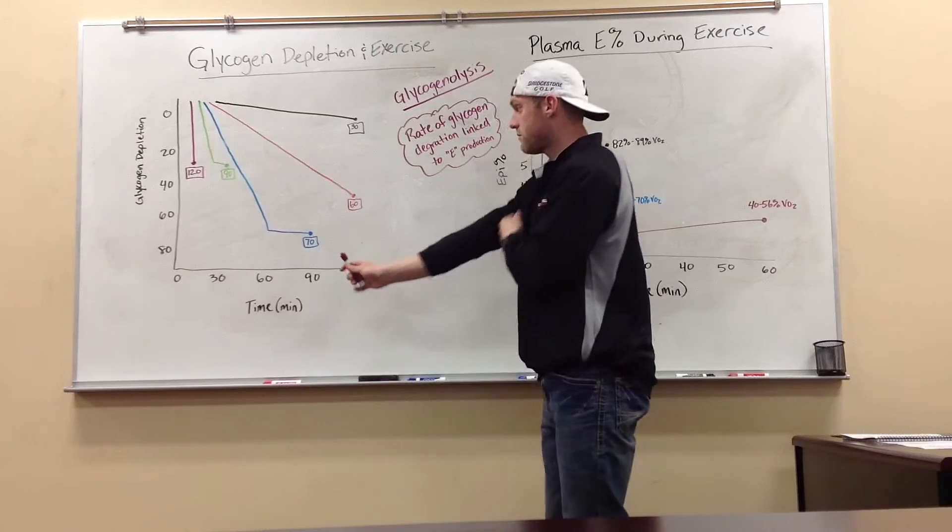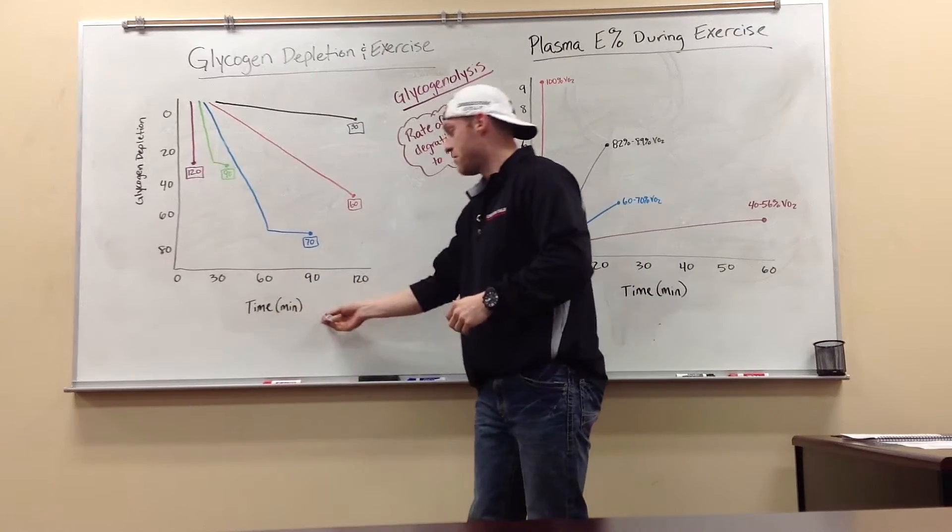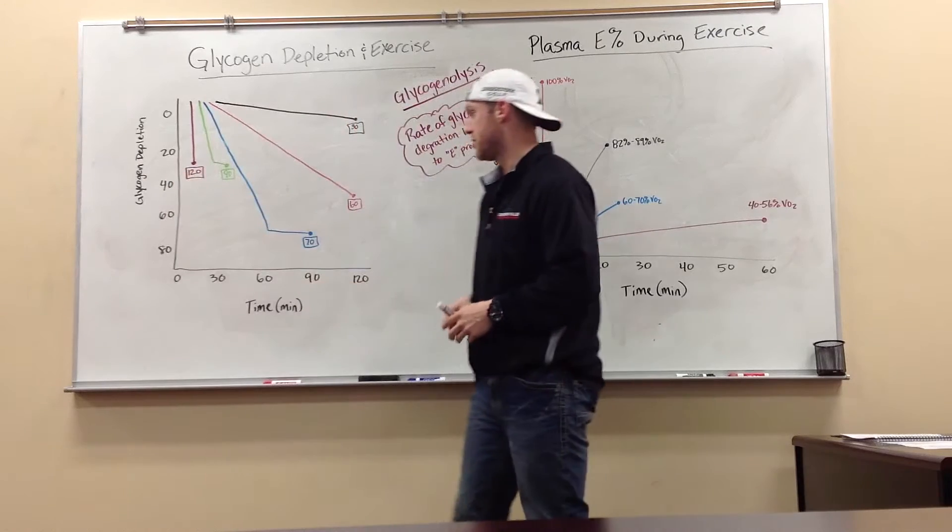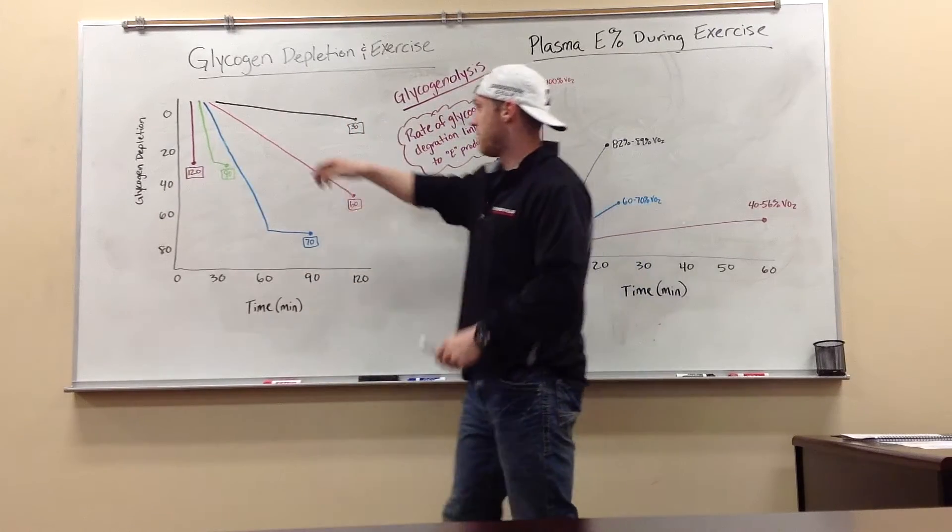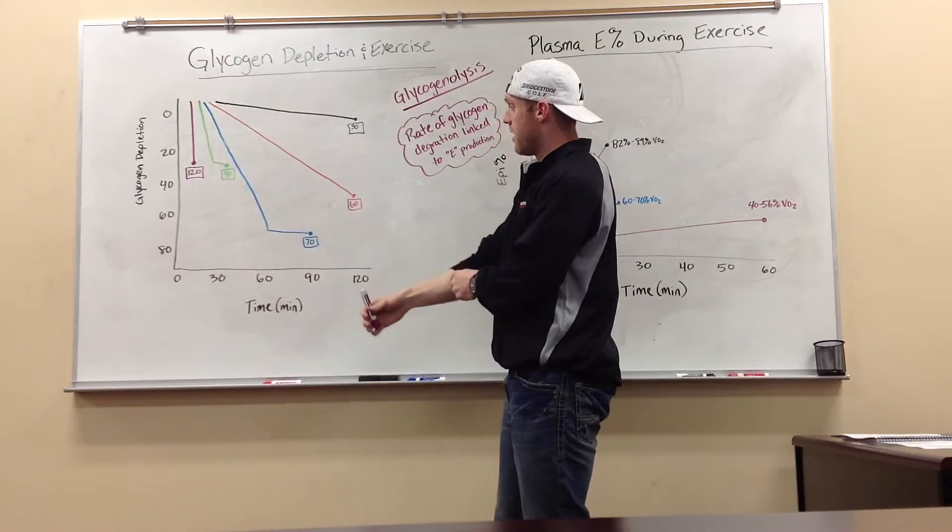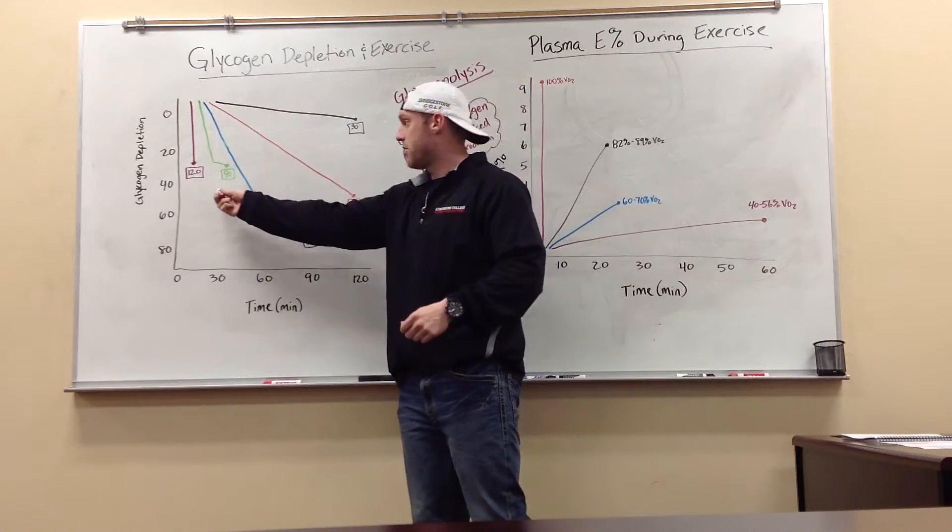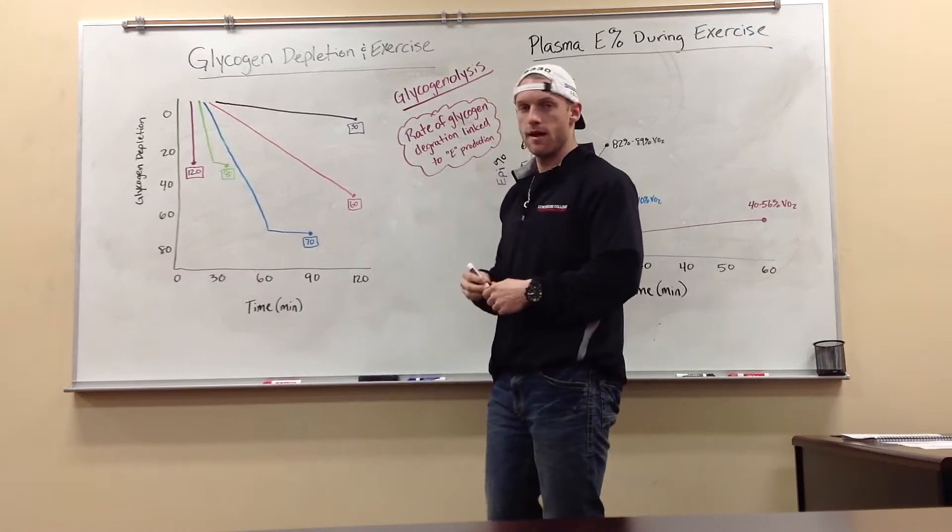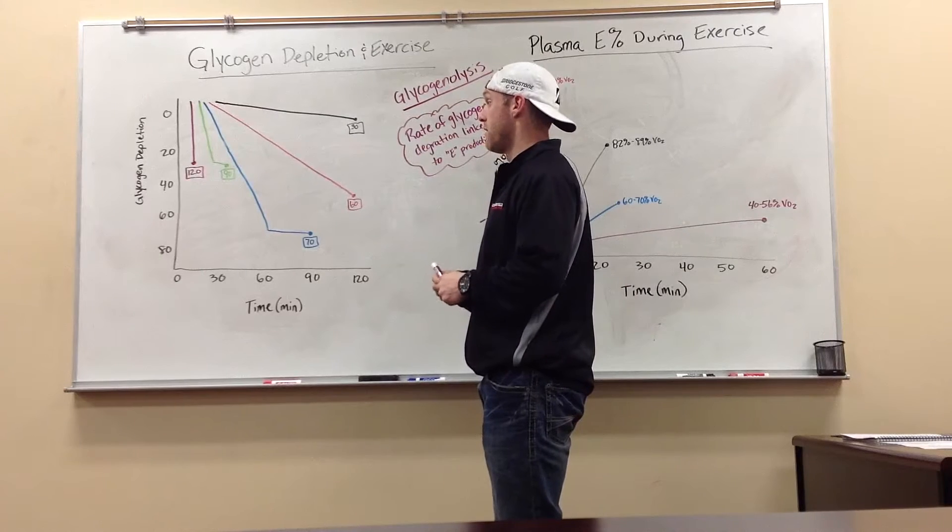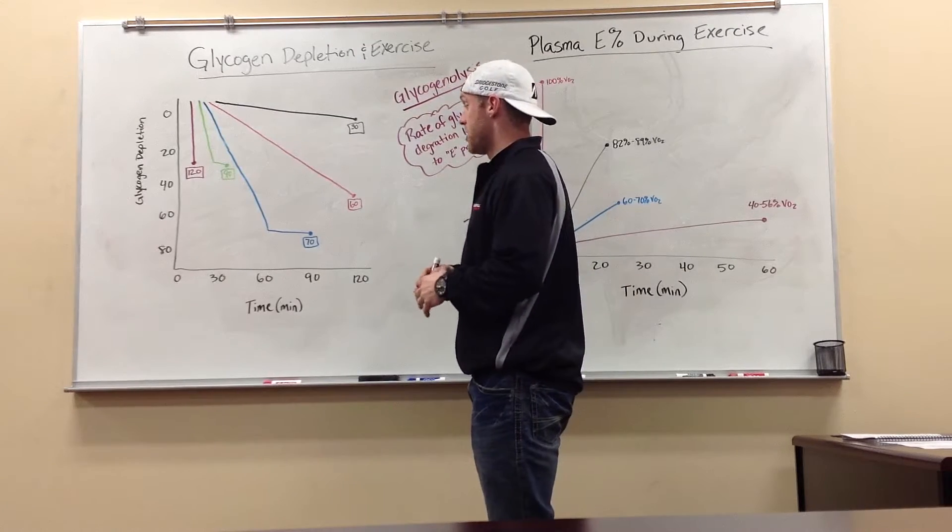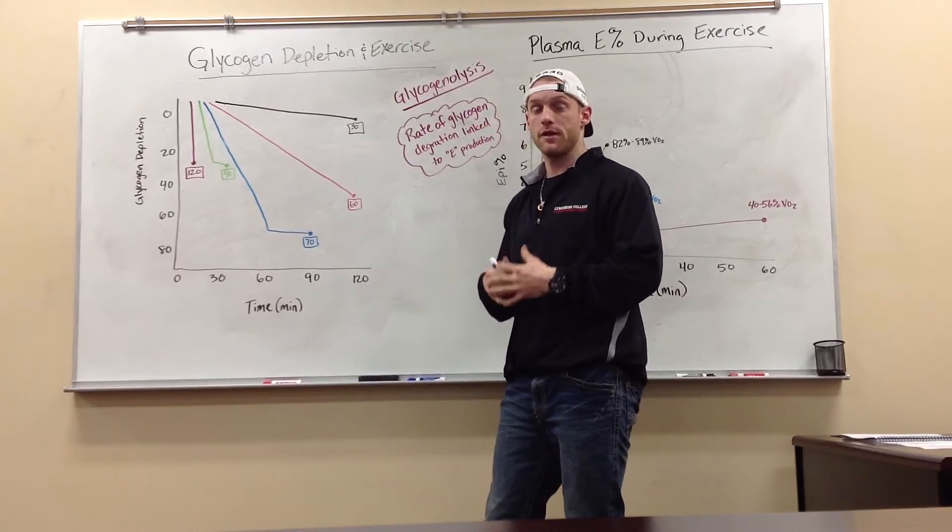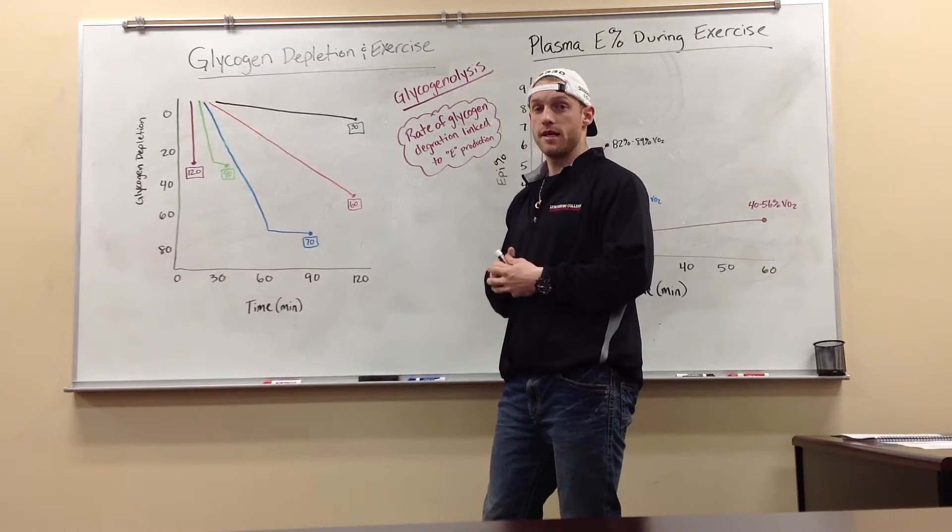I'm going to start right here. Here we have the time in minutes, and then over here on the left we have our glycogen depletion. That will be going from top to bottom, this is going from left to right. Now, these numbers in the boxes just indicate the VO2 or intensity of the exercise. Pretty much glycogen depletion is going to be directly related with the intensity of our exercise.